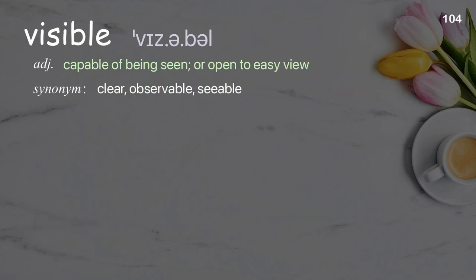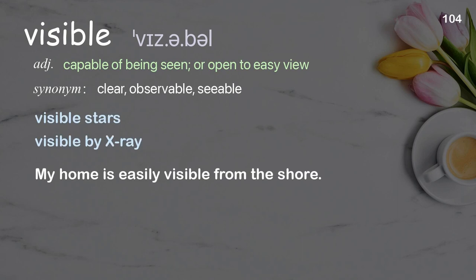Visible: capable of being seen or open to easy view. Examples: visible stars, visible by x-ray. My home is easily visible from the shore.